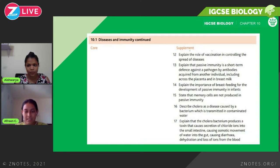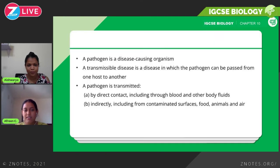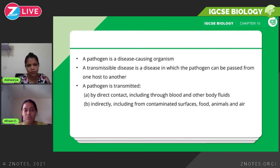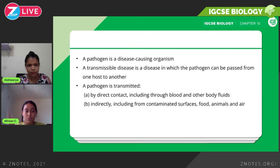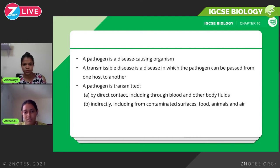The most important part of this chapter is being able to define what a pathogen is. It's simple and straightforward — a pathogen is an organism that causes disease. You should be very certain about this because it's the basic foundation of the whole chapter.